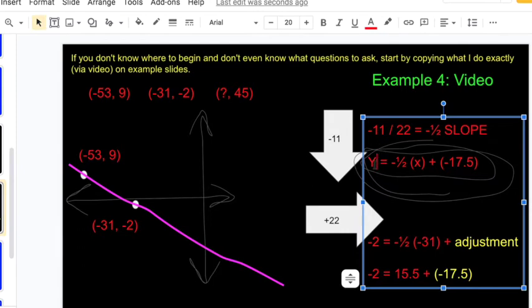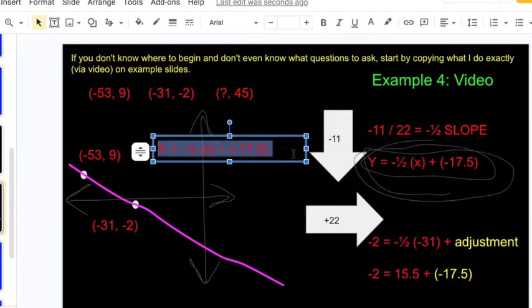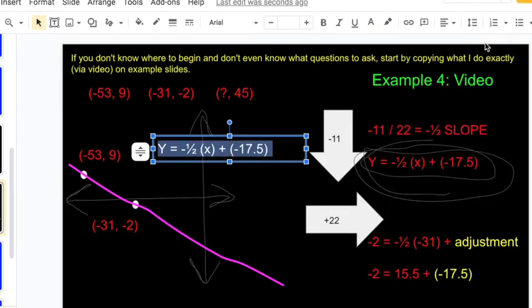Now we can use the formula to find this missing value. When y equals forty-five, what does x have to be? That's a nice simple two-step equation.